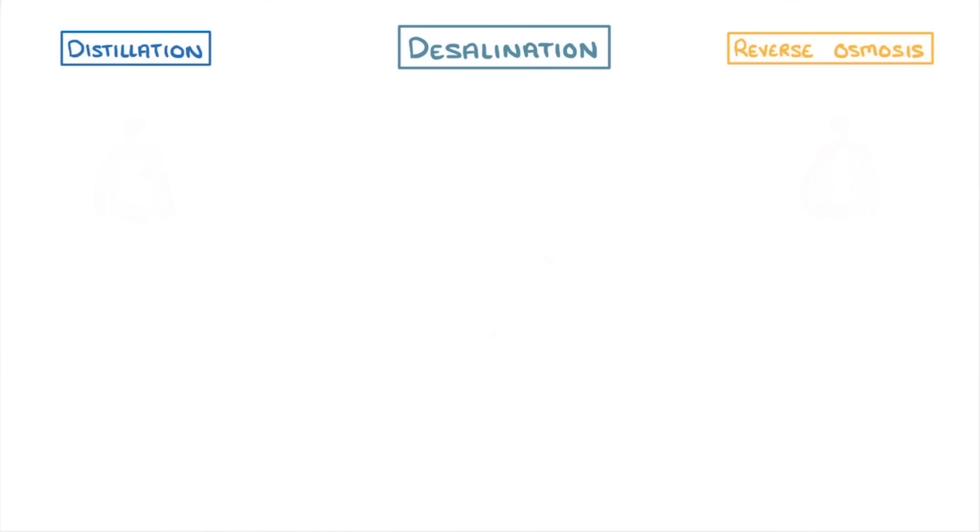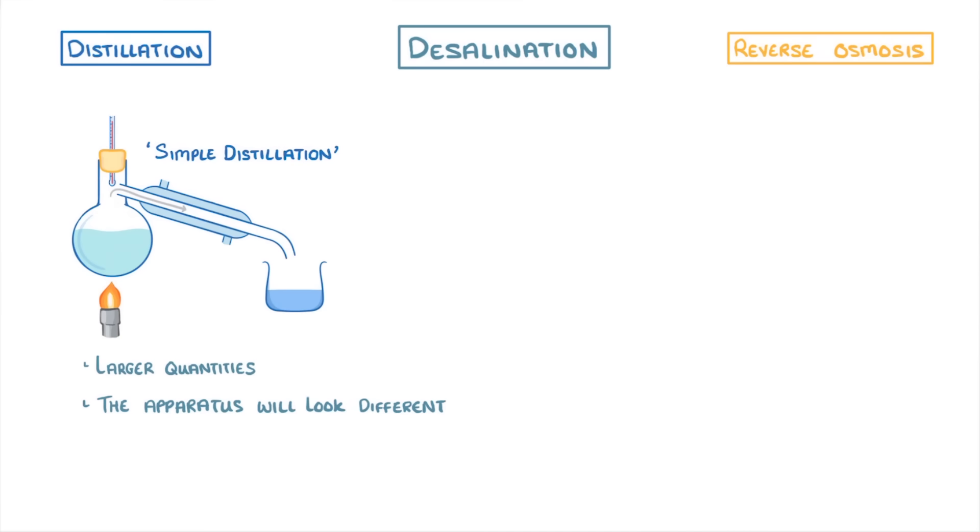In order to desalinate water by distillation, we basically just do the same thing as in simple distillation like you've seen in school, except we're boiling much larger quantities of salty water and the apparatus will look different. Regardless though, we still collect the water vapor and condense it to give us pure distilled water.